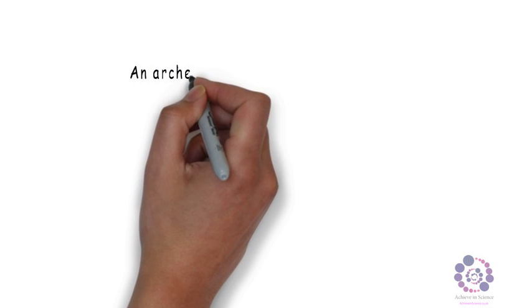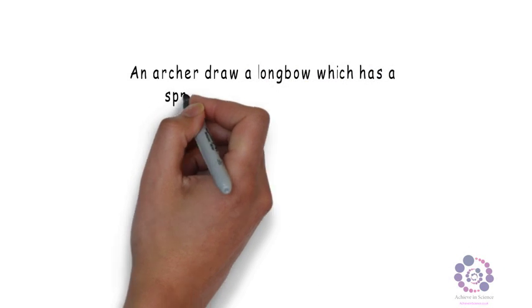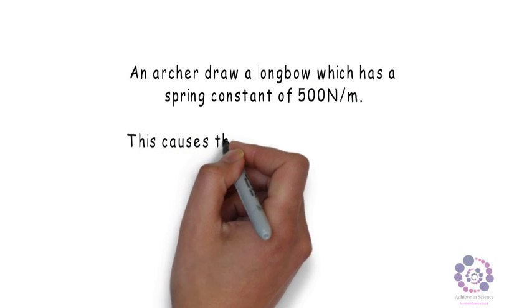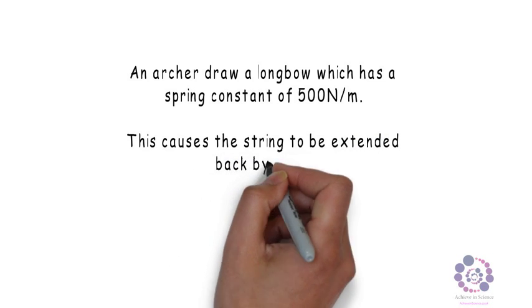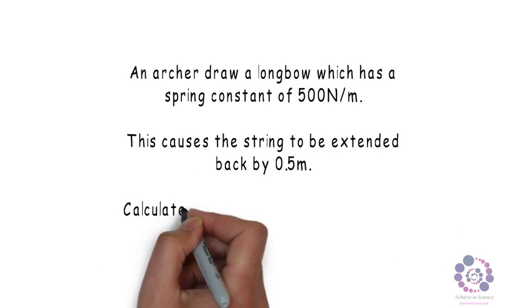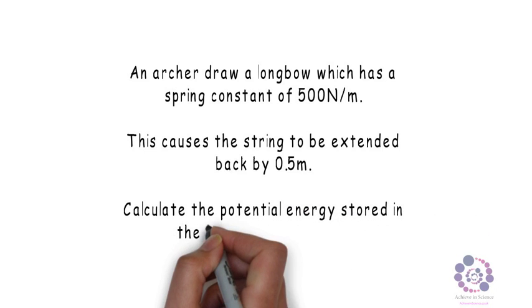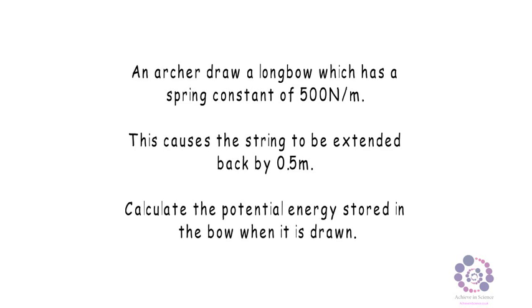Now, let's look at the question. An archer draws a long bow, which has a spring constant of 500 newtons per metre. This causes the string to be extended back 0.5 metres. Calculate the potential energy stored in the bow when it is drawn.